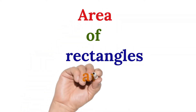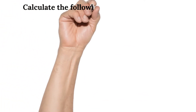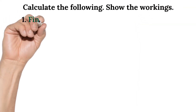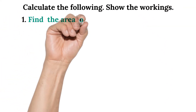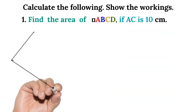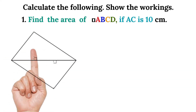Area of rectangles and triangles. Let's look at how to calculate the area of rectangles and triangles. Calculate the following and show the workings. Number one: find the area of rectangle ABCD if AC is 10 centimeters.